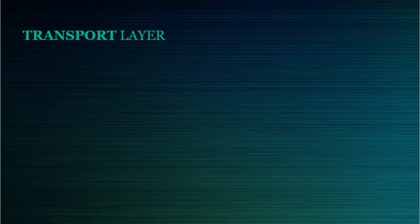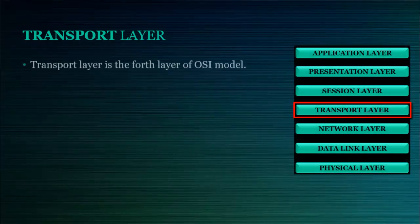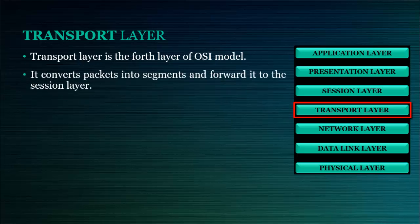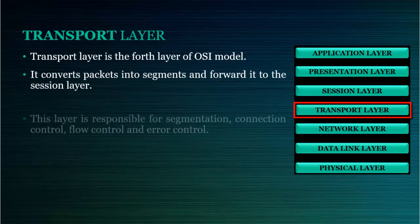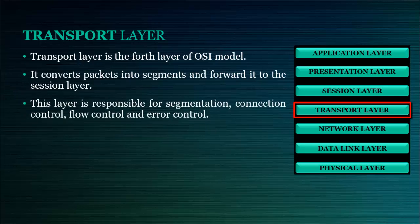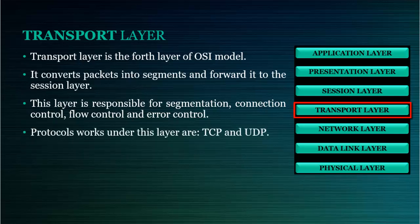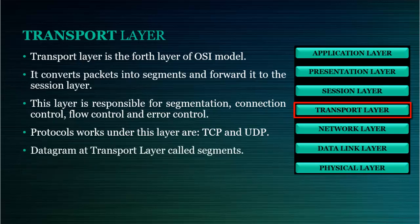Transport layer is the fourth layer of OSI Model. It converts packets into segments and forwards it to the session layer. This layer is responsible for segmentation, connection control, flow control, and error control. Protocols that work under this layer are TCP and UDP. The datagram at the transport layer is called segments.